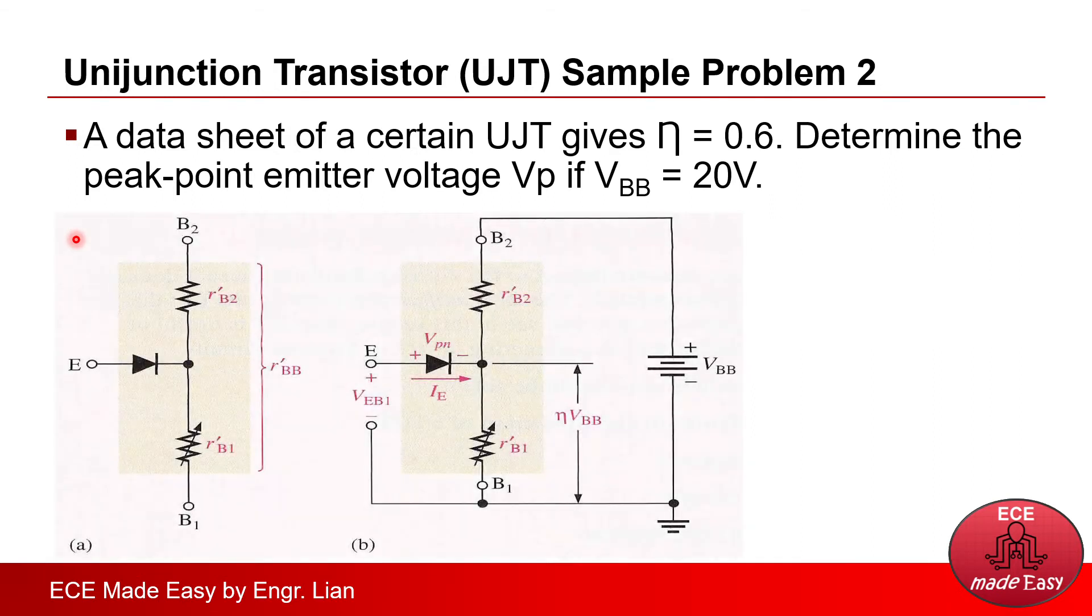So, we'll return back to the circuit we used a while ago. So, we want to determine Vp. Vp is actually an emitter voltage. Therefore, that is the voltage from the emitter up to the ground.